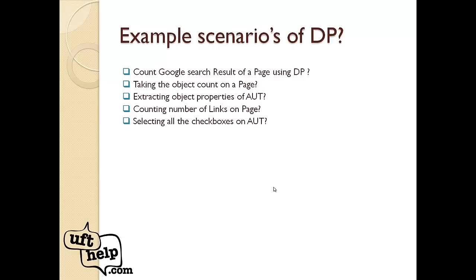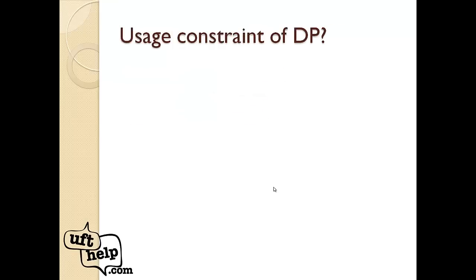Some more practical DP scenarios encountered regularly include: counting Google search results on a page using DP (code is available on ufthelp.com), getting the object count on a page, retrieving existing object properties, checking how many links or text boxes are on a page, or checking all checkboxes on a page in one go.